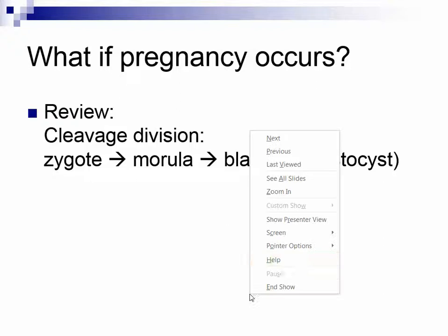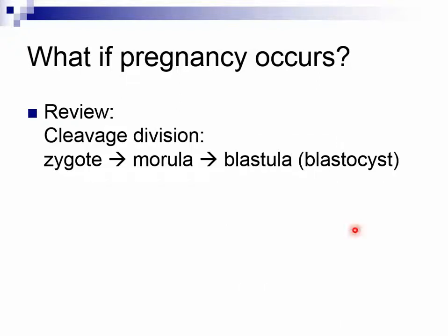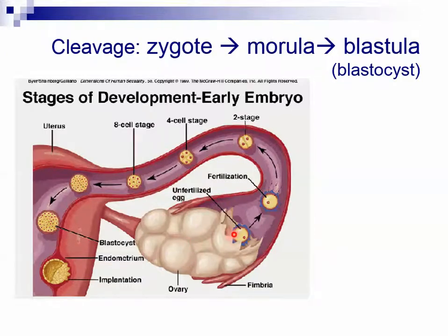This is hopefully getting to be old hat to you by now. If a pregnancy occurs, the egg becomes fertilized and we call it a zygote. The zygote begins cleavage division — rapid mitosis without cell growth. It grows into the solid ball stage called the morula, and the hollow ball stage called the blastula; in humans and other mammals this is called the blastocyst. Here we have ovulation — the egg pops out of the ovary and goes into the fallopian tubes. If fertilization is going to occur, it occurs in the fallopian tubes.